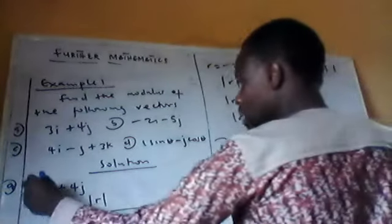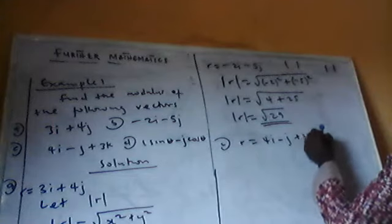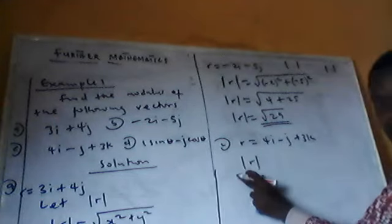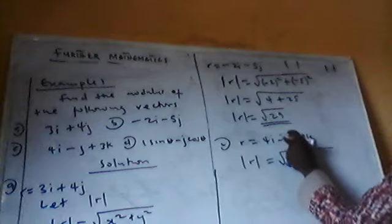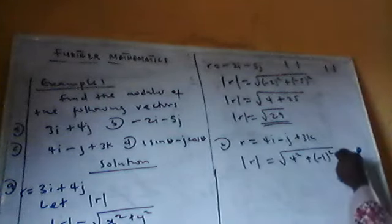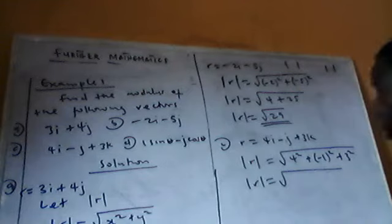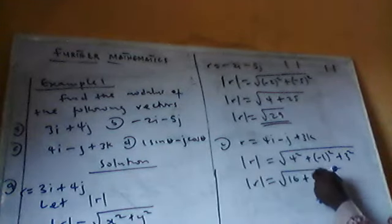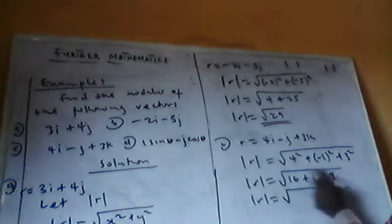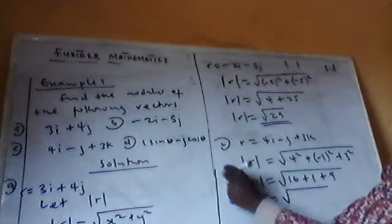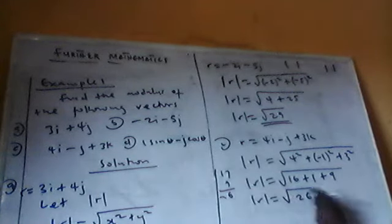Example C: R equals 4I minus J plus 3K. Modulus of R equals the square root of 4 squared plus (-1) squared plus 3 squared — that is the square root of 16 plus 1 plus 9, which is the square root of 26. So the modulus of R equals the square root of 26.